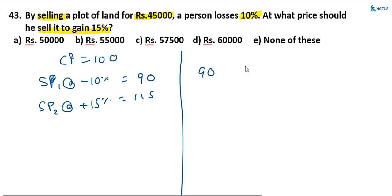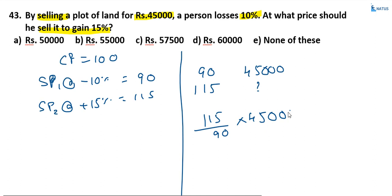90 represents 45,000. So 115 equals how much? That is what we require. This equals 115 by 90 into 45,000. Cancelling zeros, this equals 115 by 9 into 4,500, which gives 57,500. Option C is the correct answer.